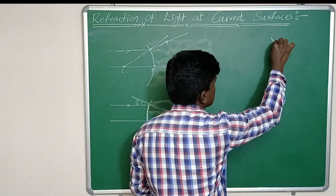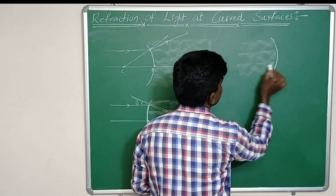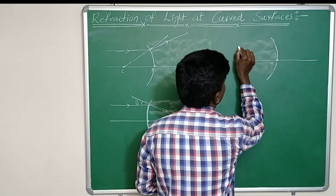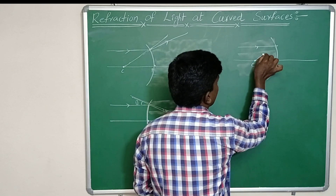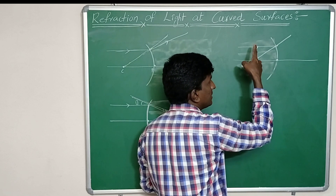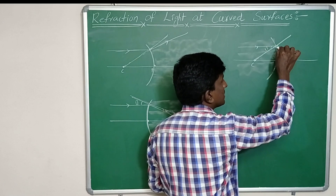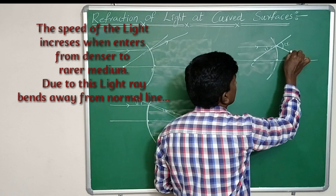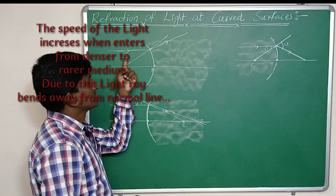Now consider a light ray incidenting on a concave surface, but this time the first medium is denser and the second medium is rarer. A light ray travels parallel to the principal axis. We draw the center of curvature and the normal line. The light is traveling from denser media into rarer air, so the angle of incidence is formed and the light ray bends away from the normal line. This is the refracted light ray.